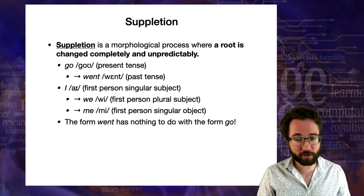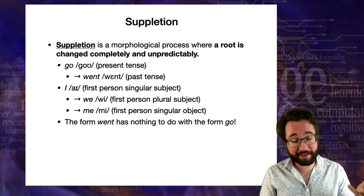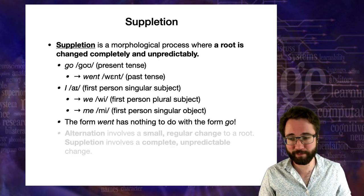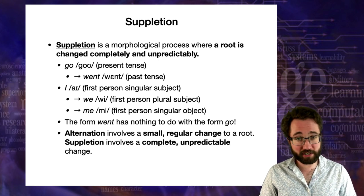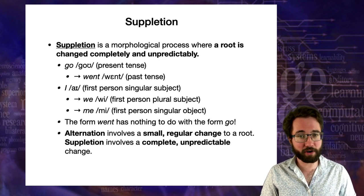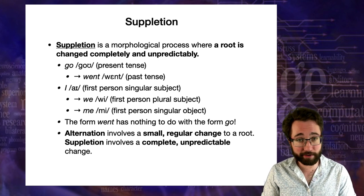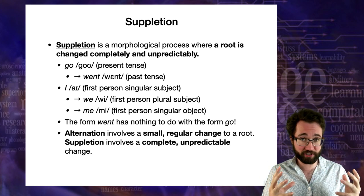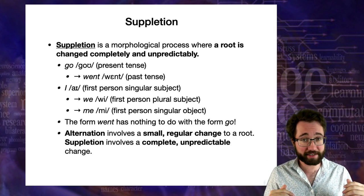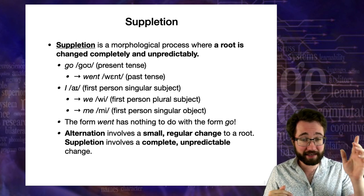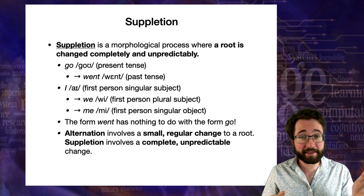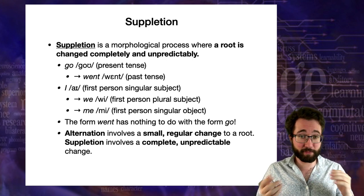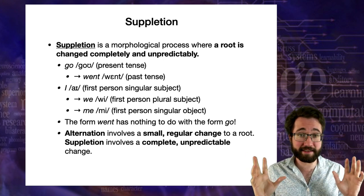It's important to contrast suppletion with alternation. Alternation involves a small and regular change to a root — as we saw with sing/sang, stink/stank. Suppletion involves a complete, unpredictable change. With 'go'/'went', you can't find any other examples of that same pattern — it's not even clear what it would mean to find other examples, because it's a completely unpredictable change. In fact, 'went' used to be the past tense of another verb, 'wend', and somehow it became the past tense of 'go'.